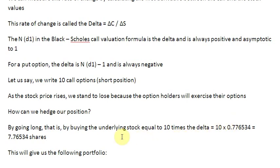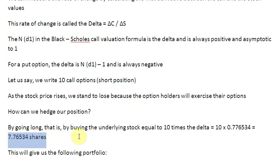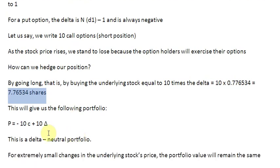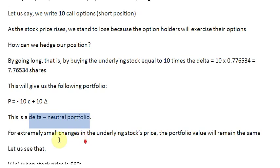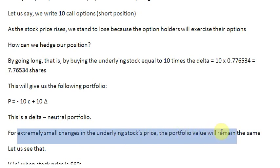We now actually have a portfolio. We have 10 call options that we have written and also 7.76534 shares in our portfolio — a short position and a long position. We can write this as: P = 10 calls short + 10 times delta number of shares. We call this portfolio a delta neutral portfolio, because for very small changes in the underlying stock's price, the value of the portfolio is not going to change.